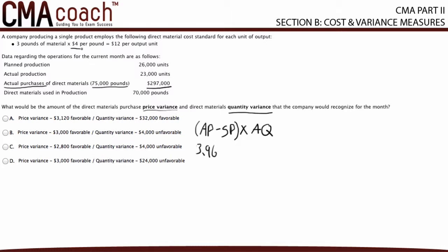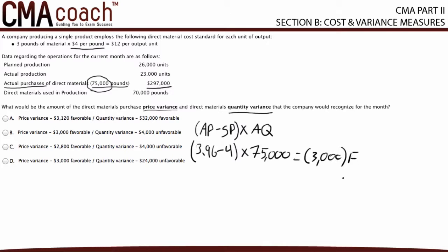The standard price is $4.00 per pound and the actual quantity purchased is 75,000 pounds. So the purchase price variance is: ($3.96 minus $4.00) times 75,000 units, which gives us a $3,000 favorable variance.